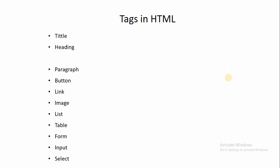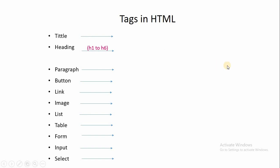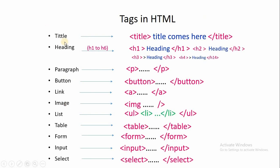Tags in HTML. This is how we developed our content in the last video. The tags we covered include heading, paragraph, button, link, image, list, table, form, input, and select. These are the most commonly used tags in web development.